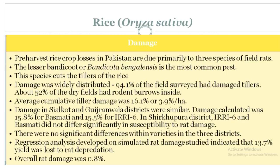Damage in Sialkot and Gujranwala districts were similar. Damaged cultivars were 15.8% for Basmati and 15.5% for IRRI-6. In Sheikhupura district, Aryan-6 and Basmati did not differ significantly in susceptibility to rat damage. There were no significant differences within varieties across the three districts. Regression analysis on simulated rat damage studies indicated that 13.7% yield was lost to rat infestation. Overall, rat damage was 0.8%.